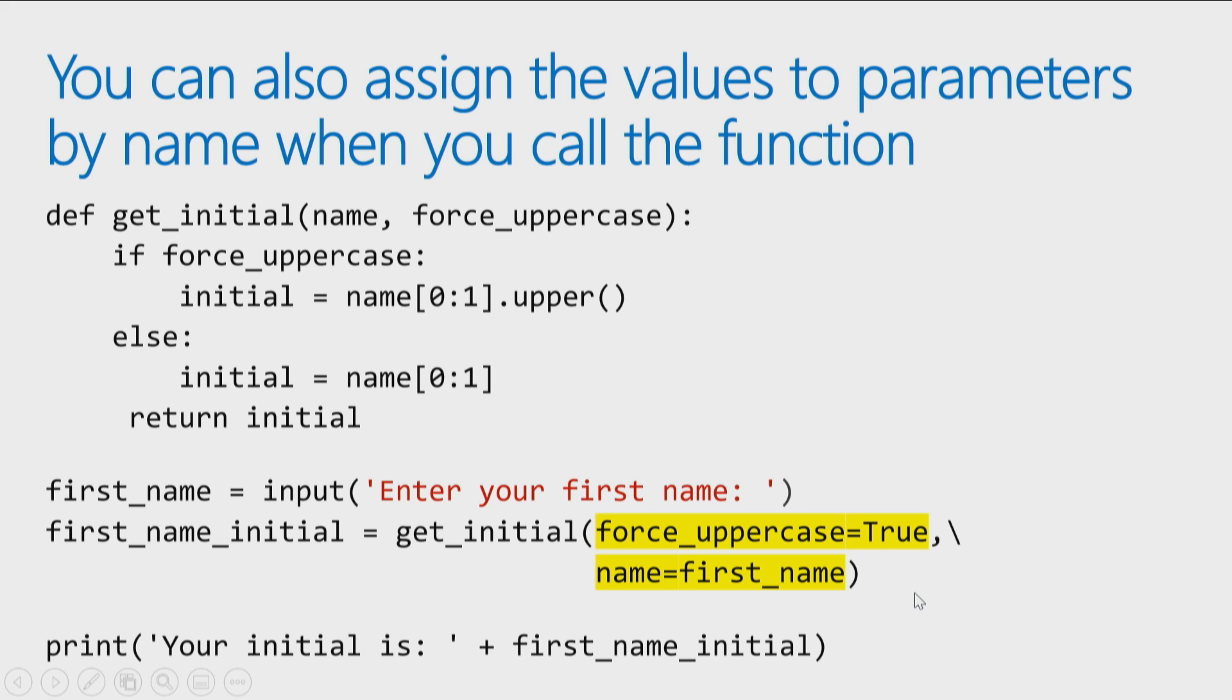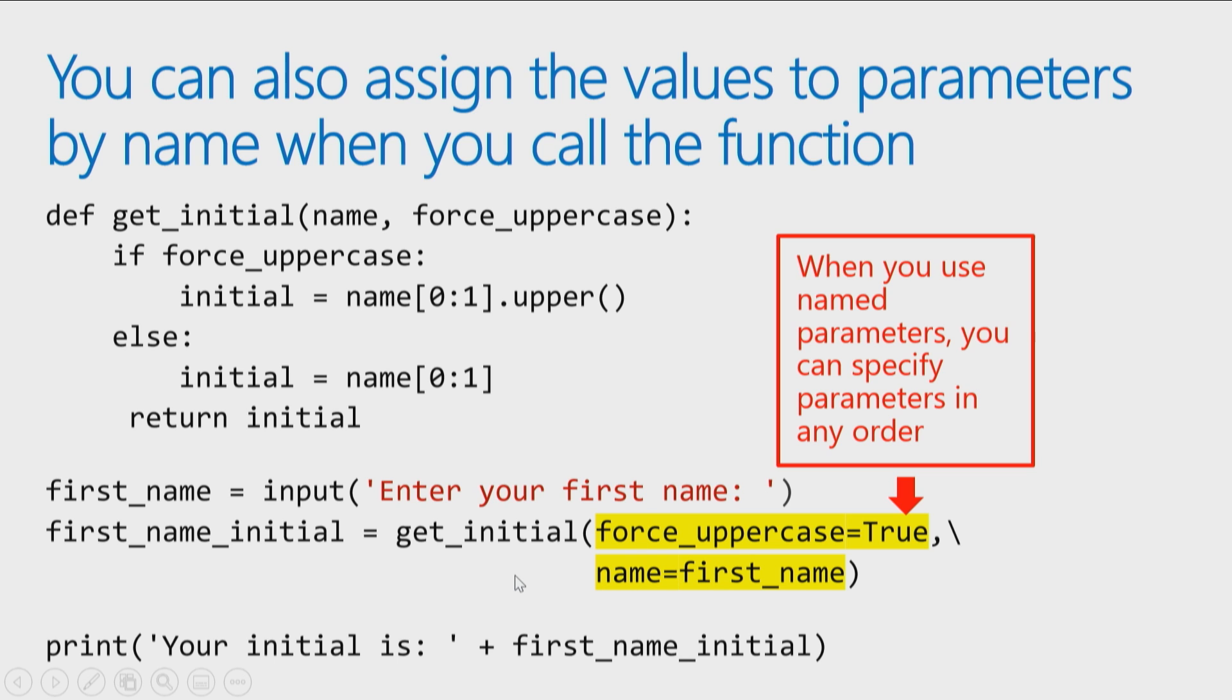So in this case, it doesn't matter where I specify them, because I'm telling the function here's the value for forceUppercase, here's the value for name. By naming the parameters, it doesn't matter what order I specify them in. I still have that option if there are default parameters, default values for the parameters, they're still optional to specify.